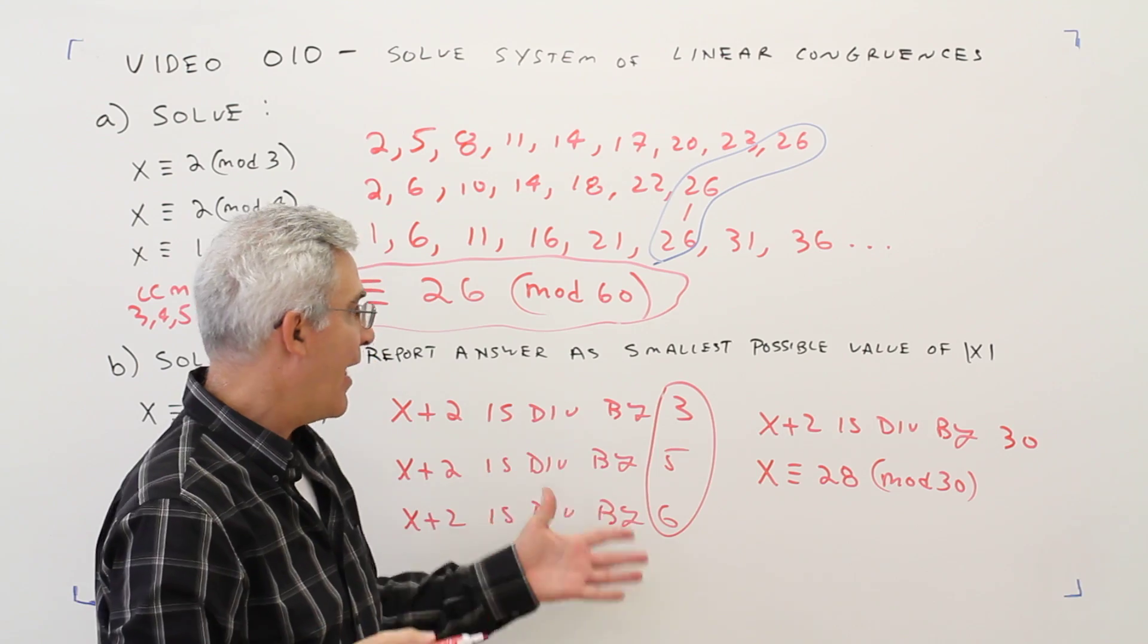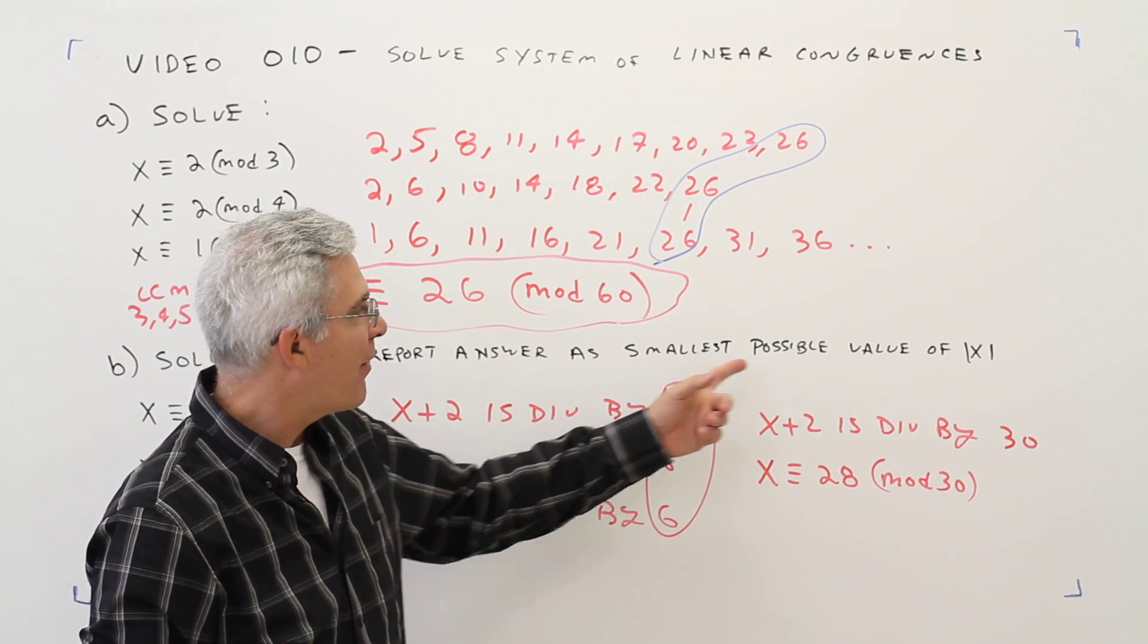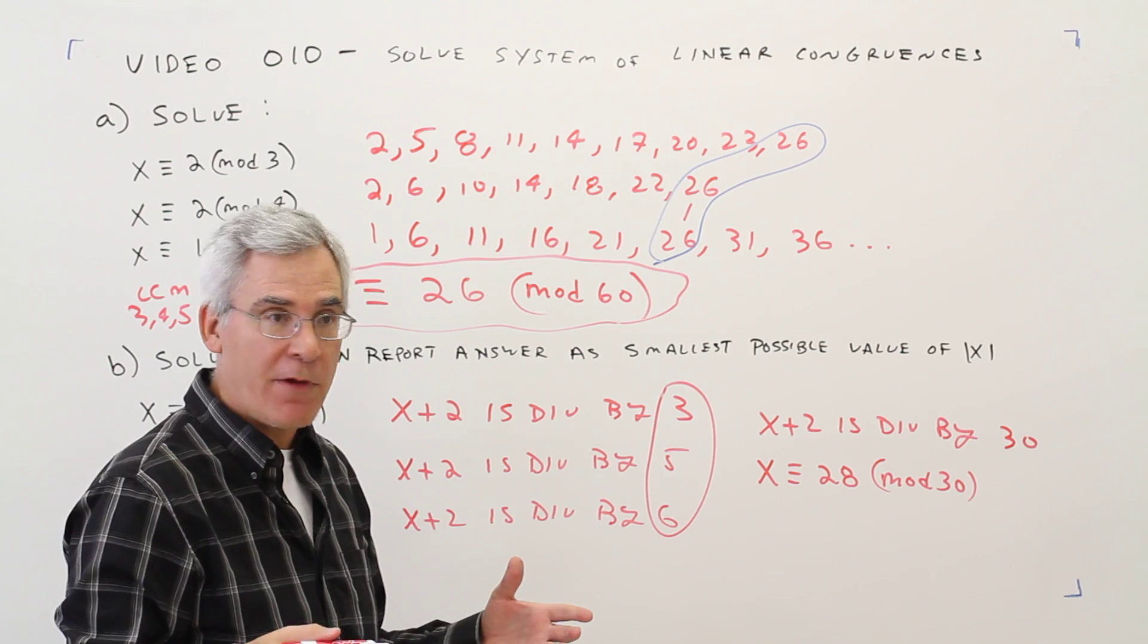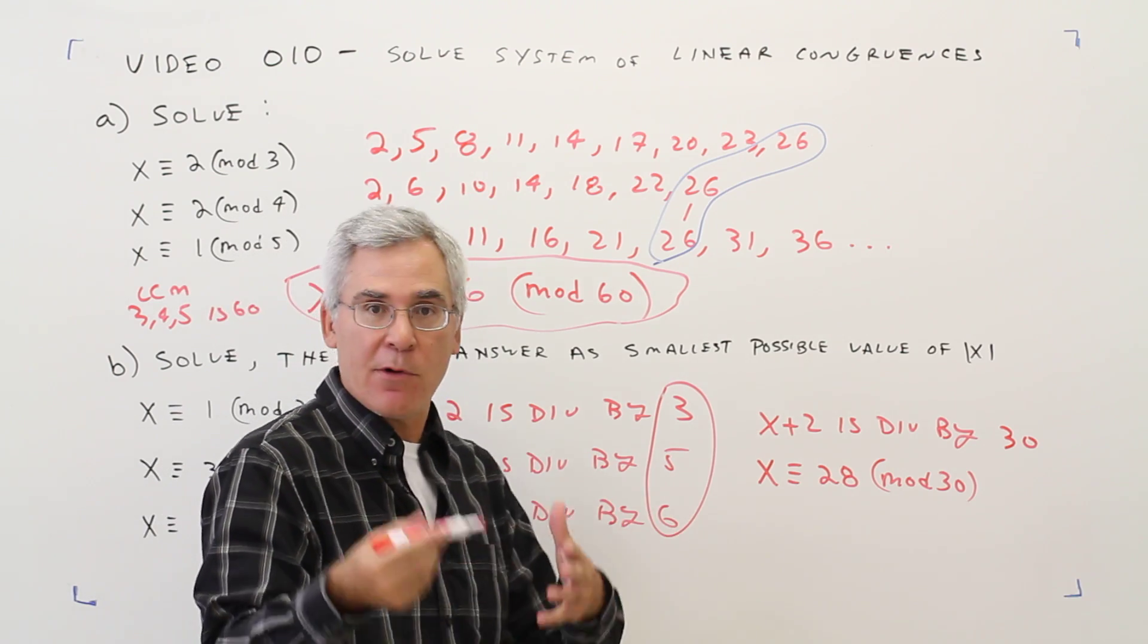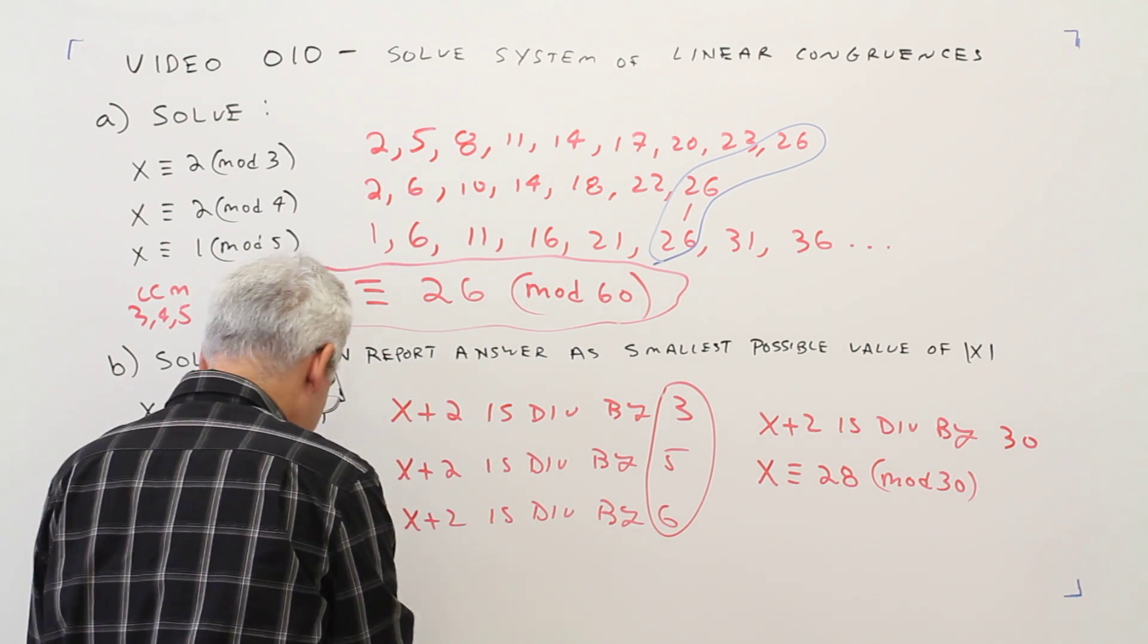However, that's not what they wanted. They wanted the smallest possible value of the absolute value of x. So let me just list some numbers and see how I can get the smallest possible value.